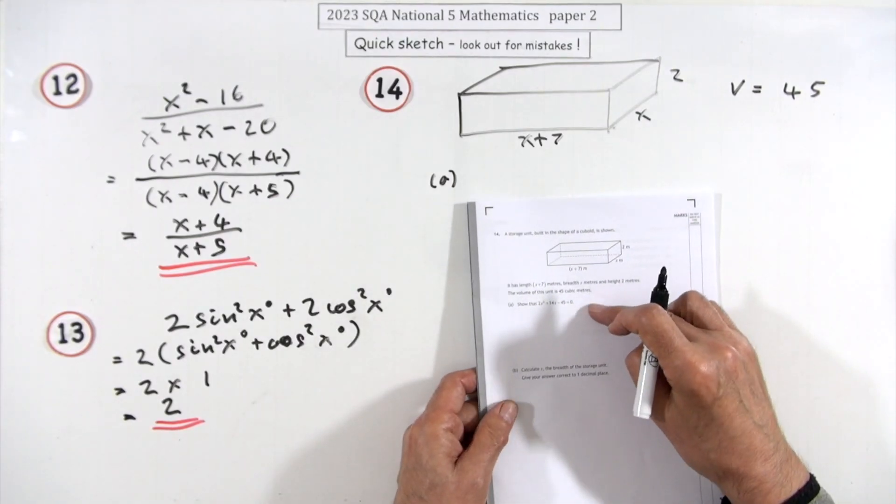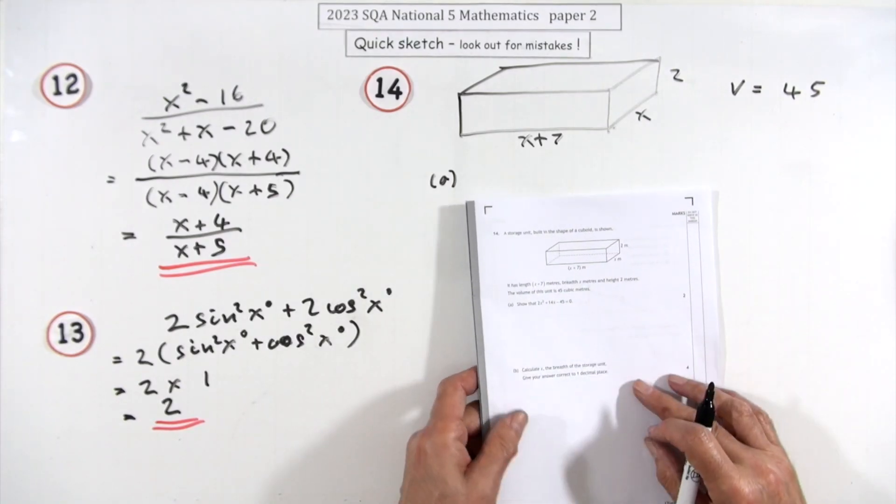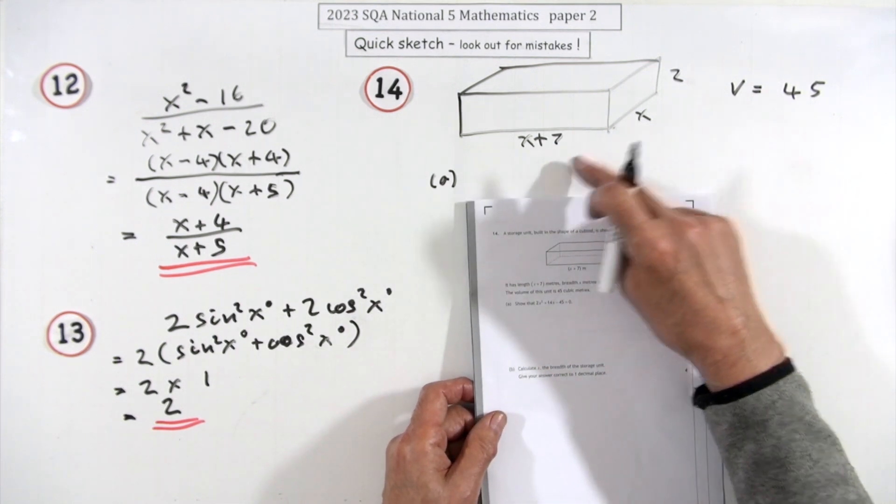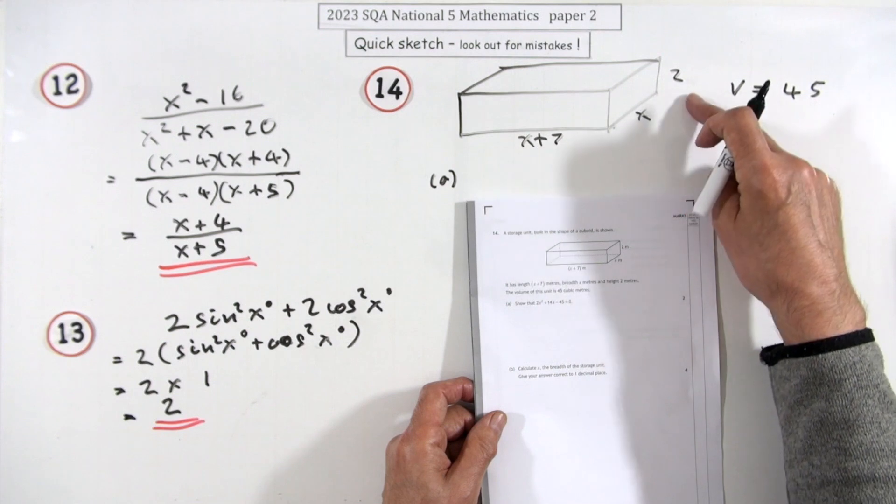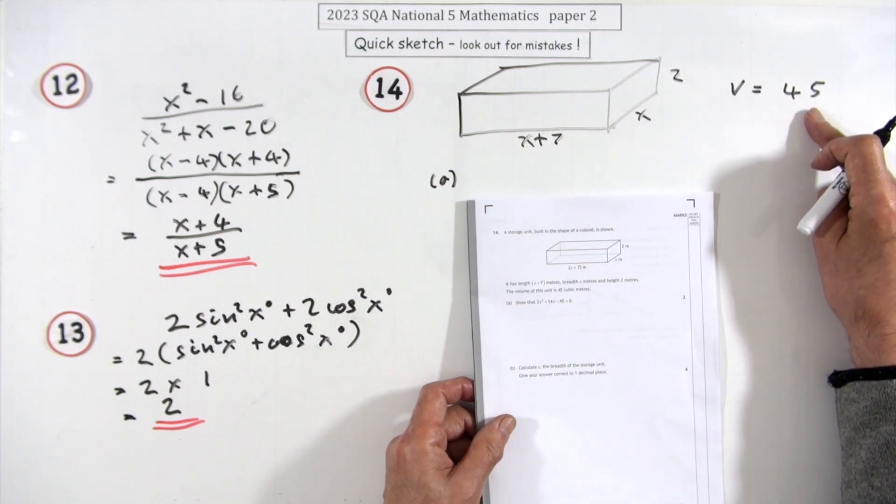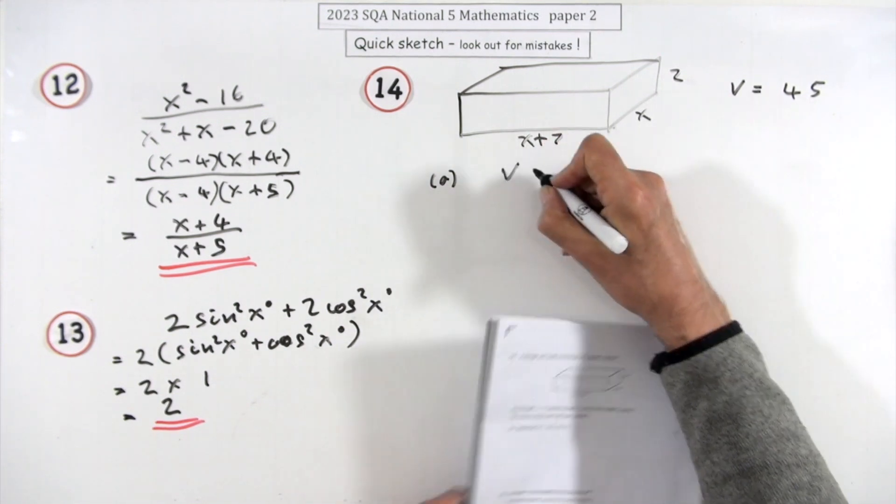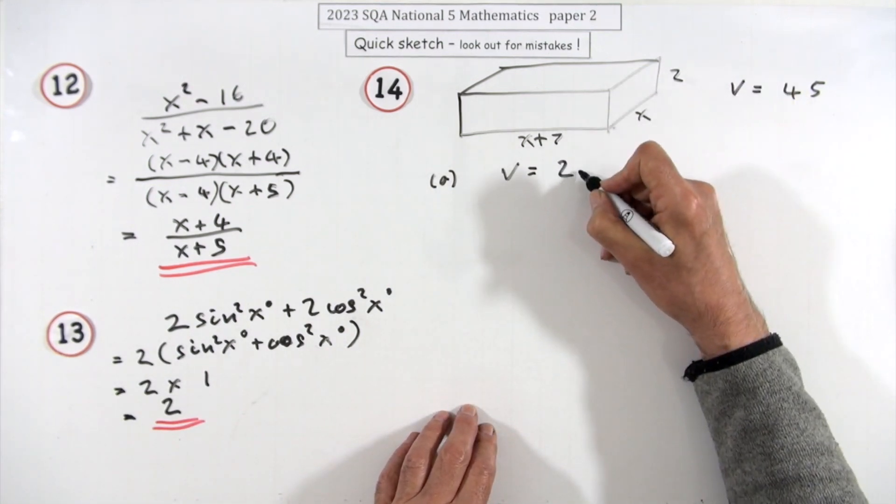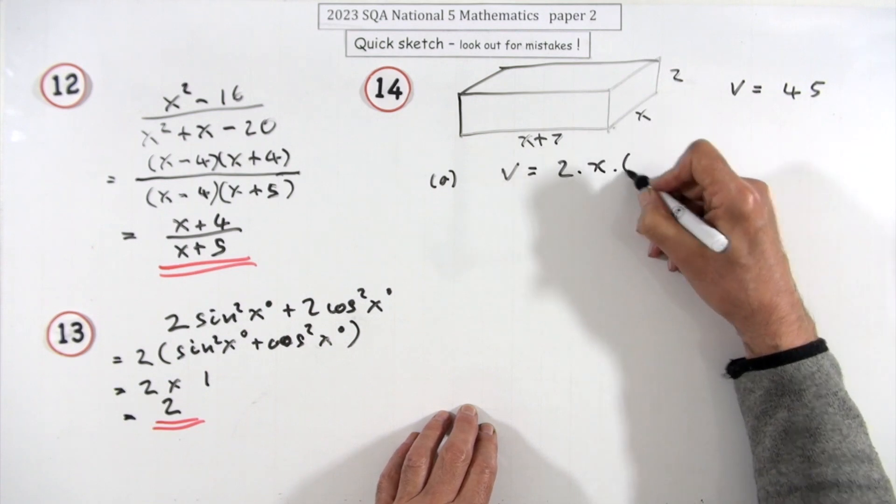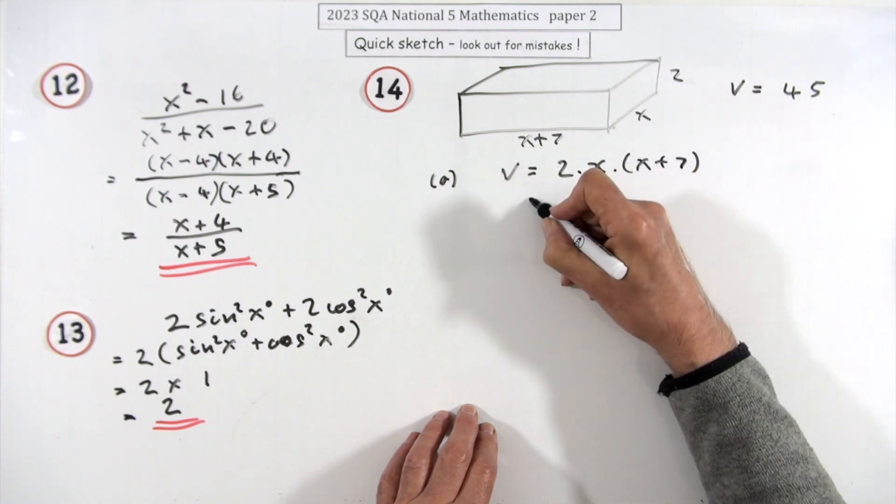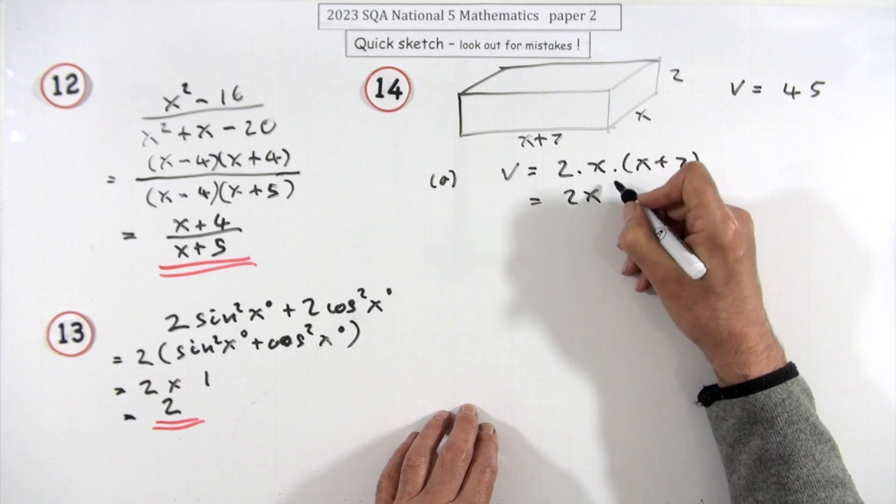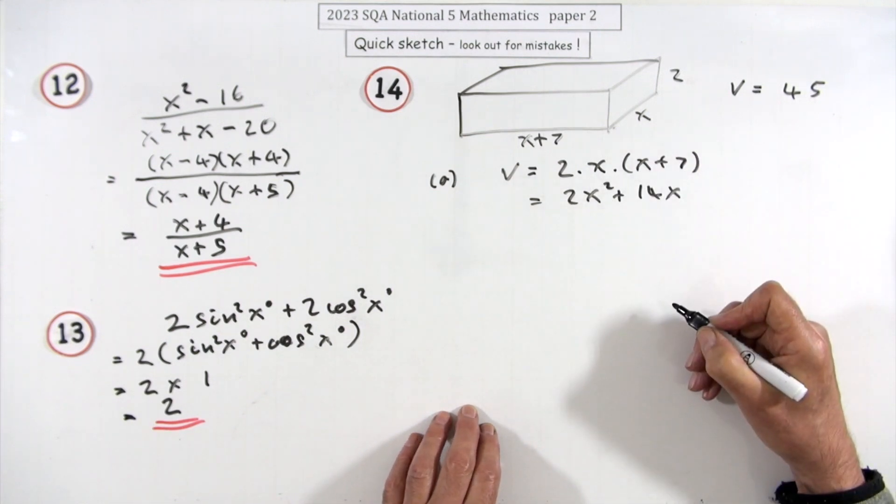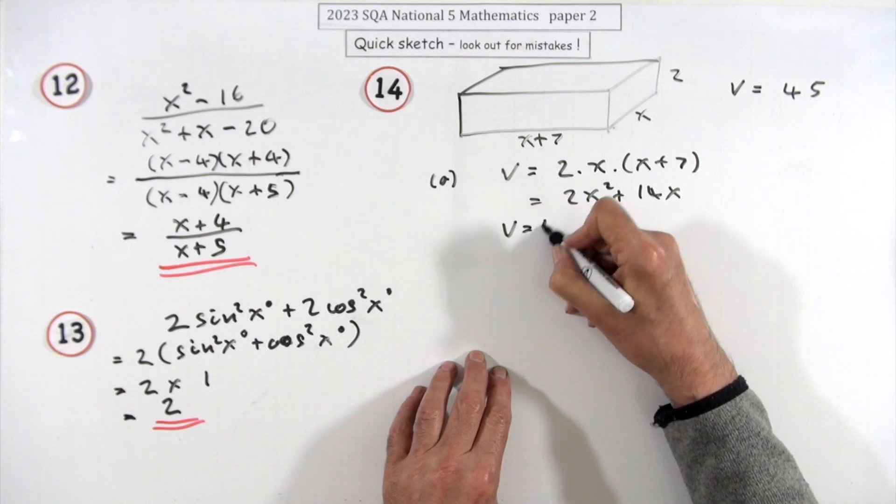Question 14. You can see it's going to be solve a quadratic equation using the formula. First of all, you've got to derive this equation. Here's a box. There's the dimensions: the length, the breadth, the height. It tells you that the volume should be 45, so you just do that. What's the volume? It'll be the length times the breadth times—I think I'll put it in a different order—it'll be 2 times x times x plus 7.